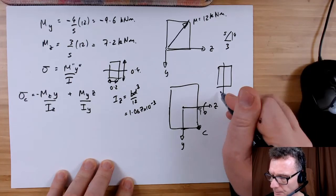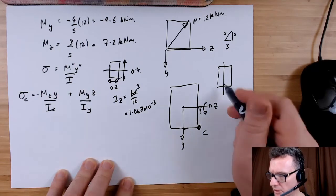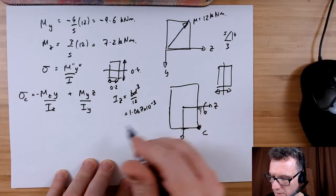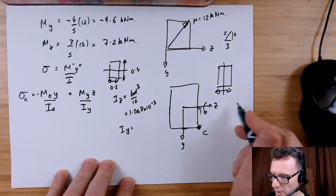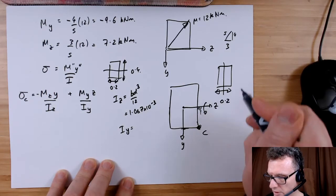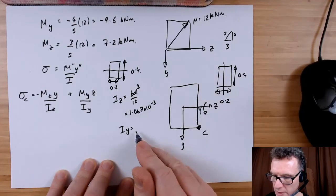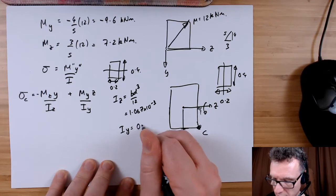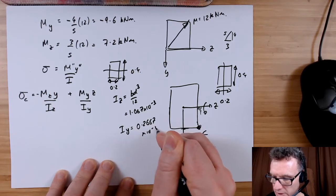Now for IY, things are turning in this direction. This is going to be my depth. IY, my depth will be 0.2 this time and my breadth will be the 0.4. Put them in and we're going to end up with a slightly smaller 2.667 times 10 to the minus 3.